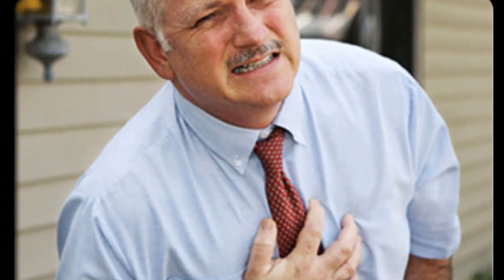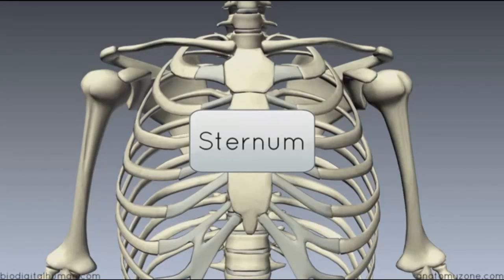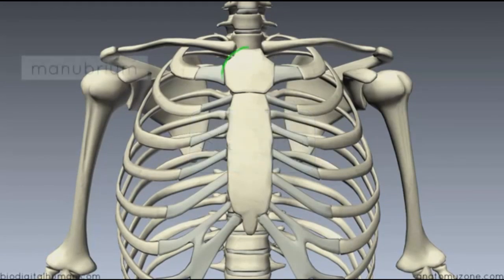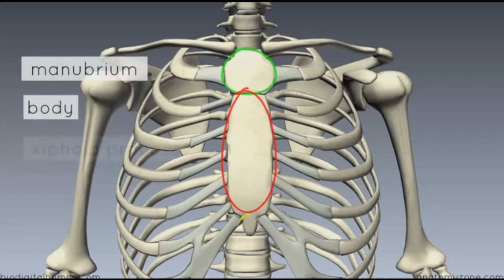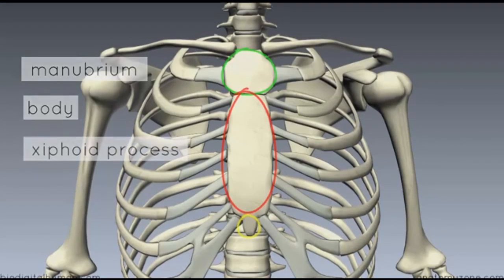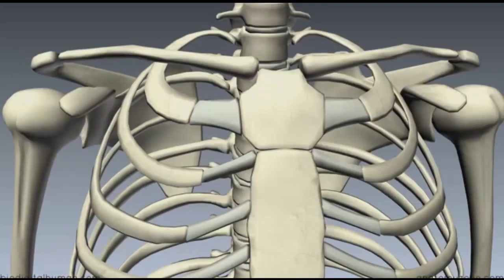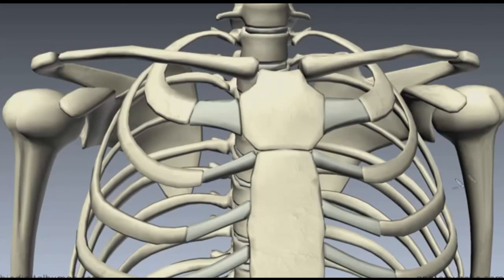This is a quick tutorial on the sternum. The sternum consists of three parts: you've got the manubrium of the sternum, the body of the sternum, and the xiphoid process inferiorly. We'll begin by taking a look at the manubrium of the sternum first.